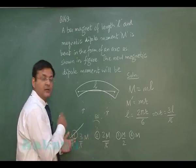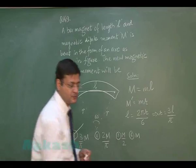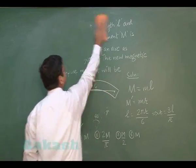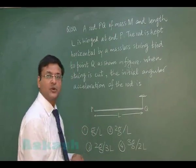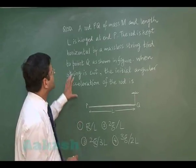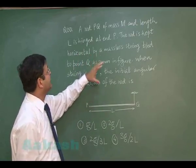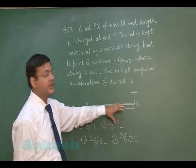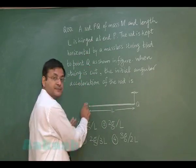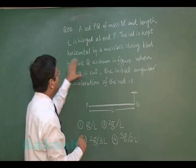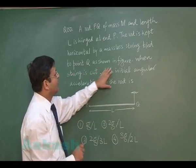Now question 150 is based on system of particles and rotational motion. A rod PQ of mass M and length l is hinged at end P, meaning the rod is ready to rotate about point P. The rod is kept horizontal by a massless string tied to point Q, as shown in the figure.